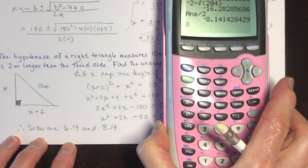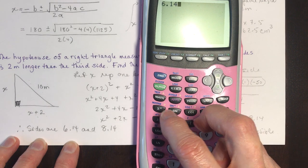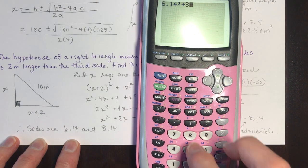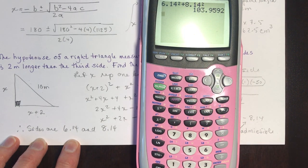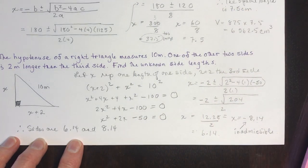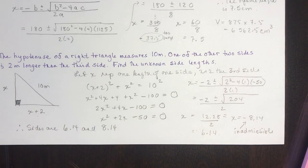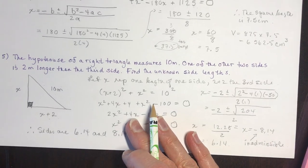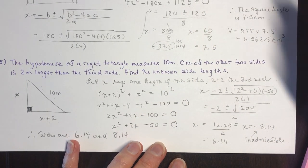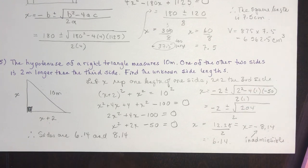Let's verify: 6.14 squared plus 8.14 squared equals approximately 103.9, which is close to 100 — the small difference is due to rounding when we took the square root. That's how you do these number problems. If you have any others you're having trouble with, feel free to leave a comment below, and I hope you've subscribed to the channel.